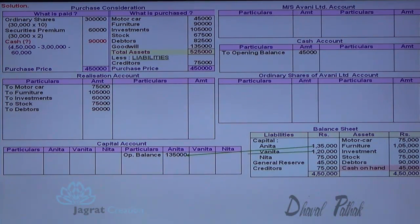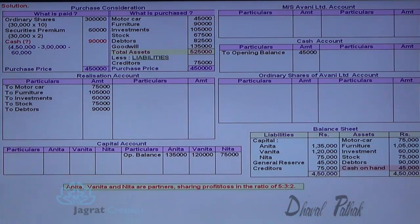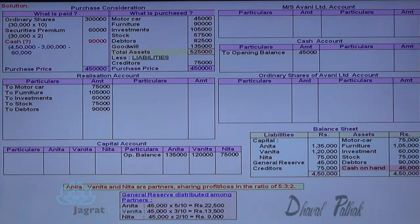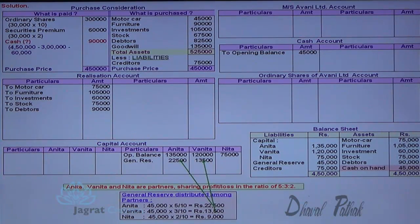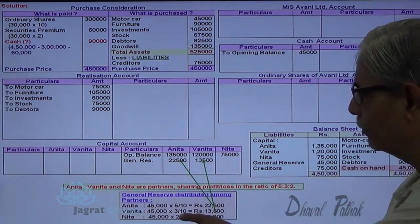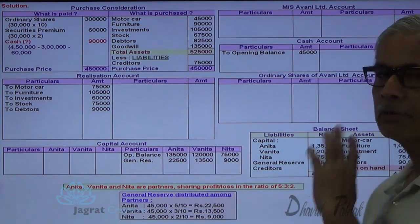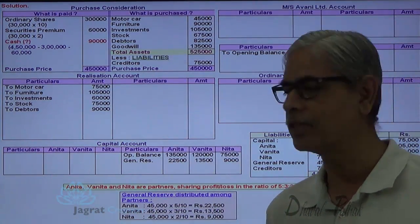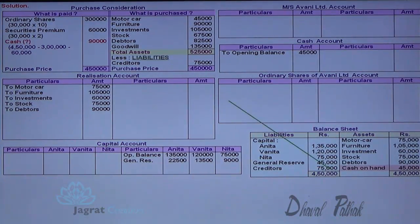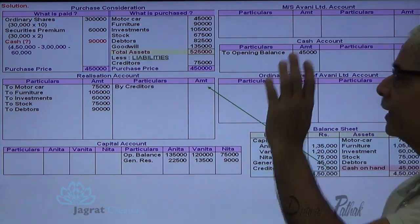The cash balance of 45,000 is distributed in the profit sharing ratio of 5:3:2. So Anita's share is 45,000 × 5/10 = 22,500; Vanita's share is 13,500; and Neeta's share is 45,000 × 2/10 = 9,000. General reserve is also distributed amongst partners in the profit sharing ratio. Creditors are transferred to the credit side of the realization account.